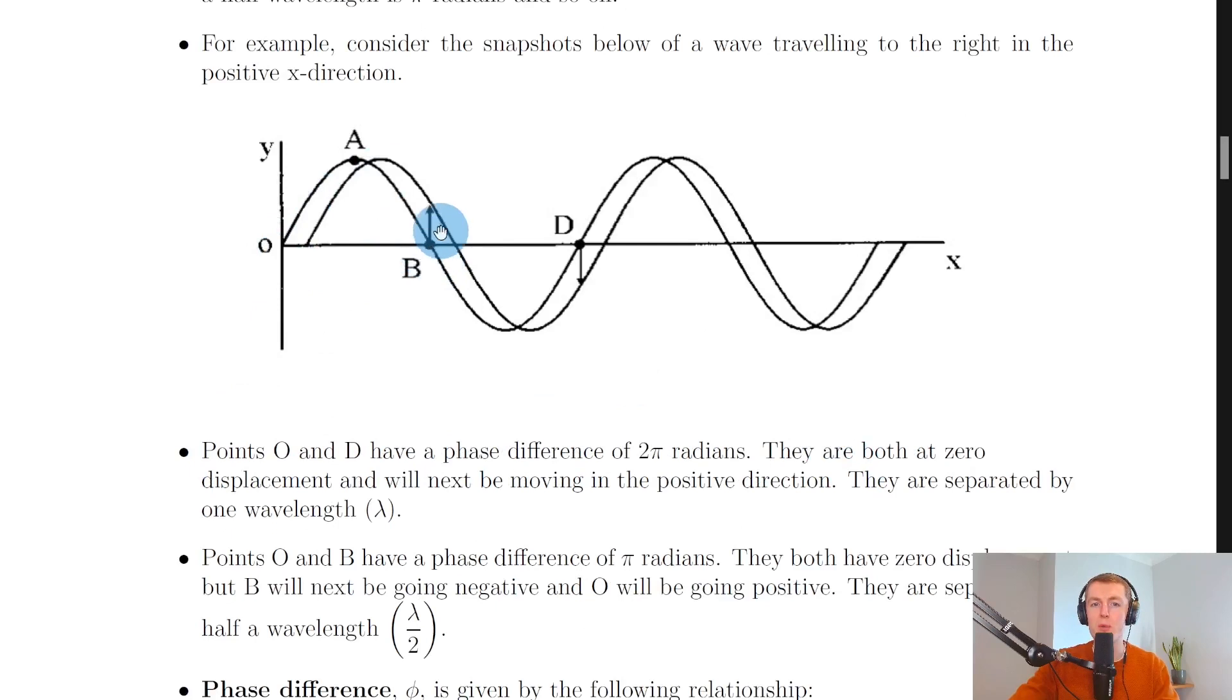They are separated by half a wavelength lambda over two. Here's point O and here's point B and you can see that's half a wavelength difference which is the same as pi radians. Point O is going to go into the positive x direction whereas point B is going into the negative x direction.